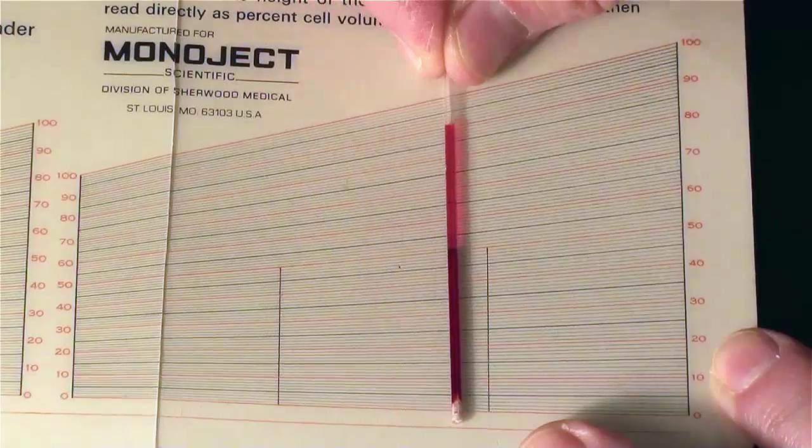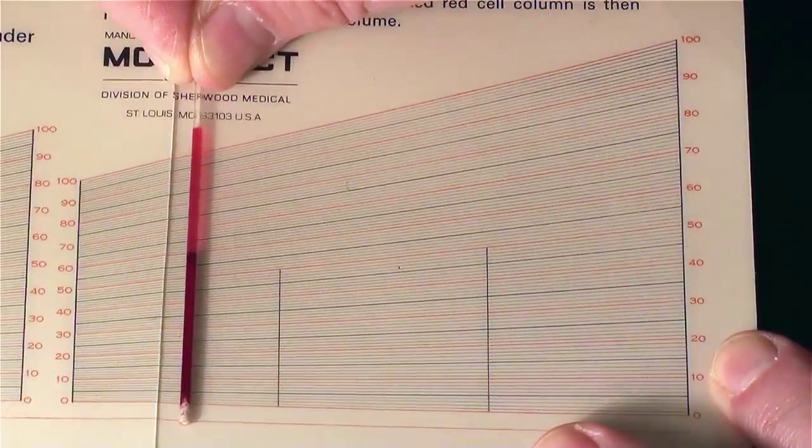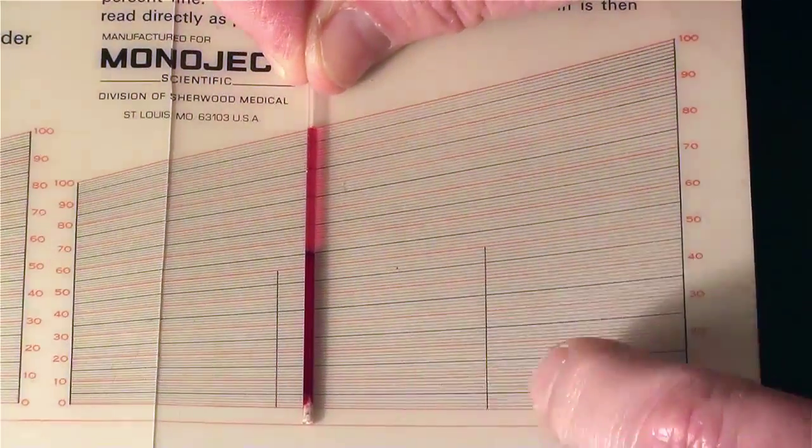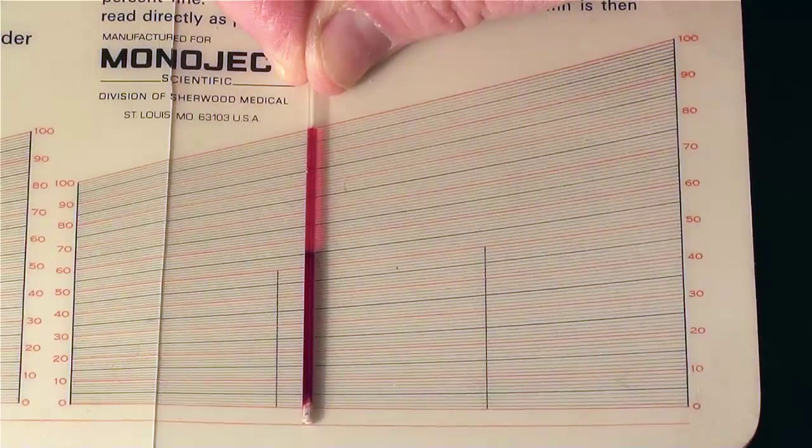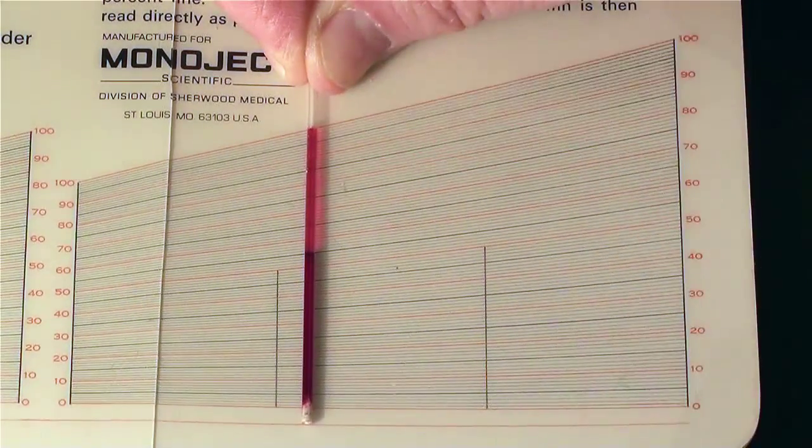In order to do that, I need to slide the tube left and right until the bottom of the blood is on the zero line and the top of the blood is on the hundred line.